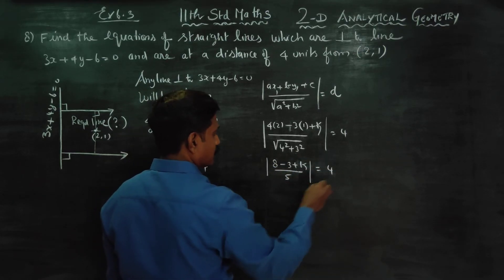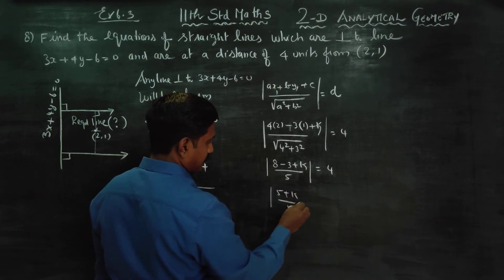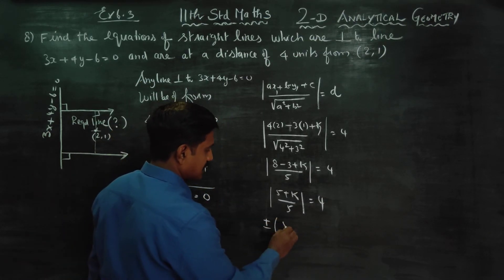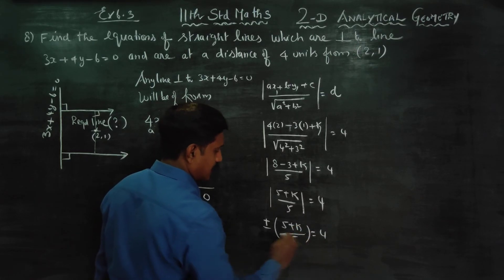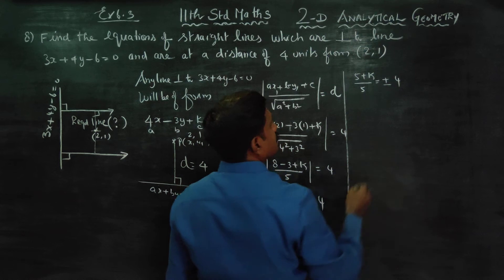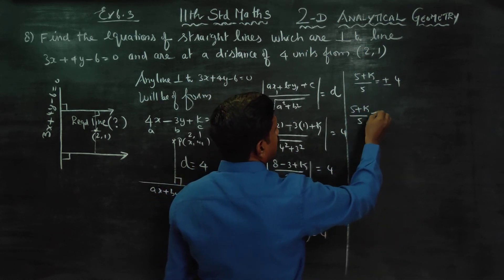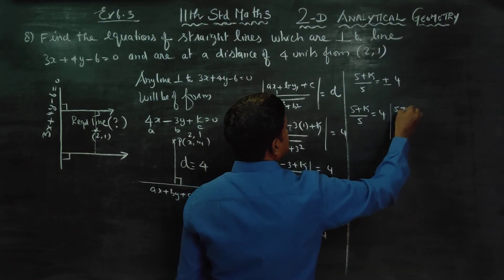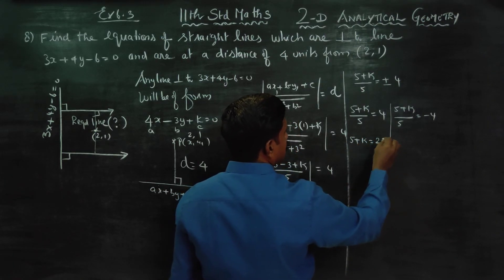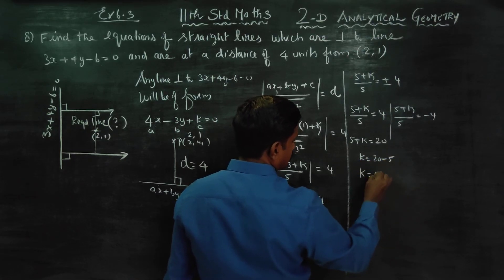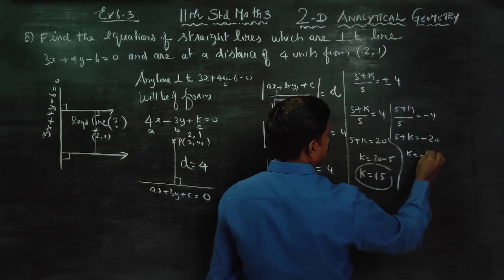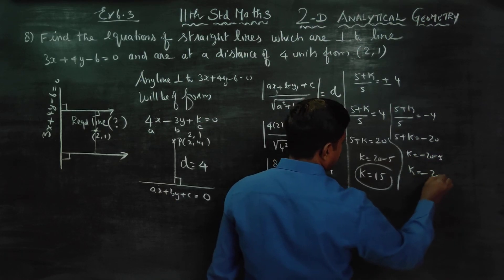Since √25 = 5, we have |5 + k| / 5 = 4. Removing the modulus gives plus or minus (5 + k) = 20. For the positive case: 5 + k = 20, so k = 15. For the negative case: 5 + k = -20, so k = -25. These are the two values of k.